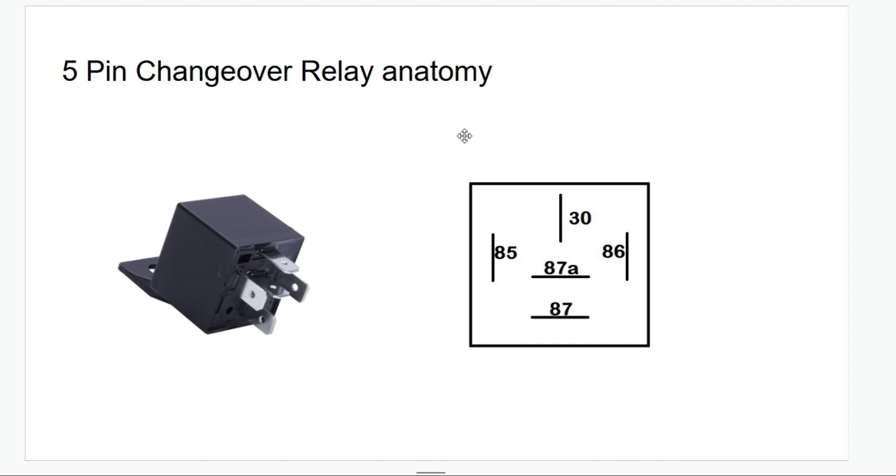So the anatomy of the changeover relay is pretty simple as it has five pins and they're all labelled in this fashion. So you've got pin 30, 87, 87A, 85 and 86.